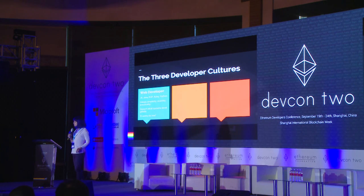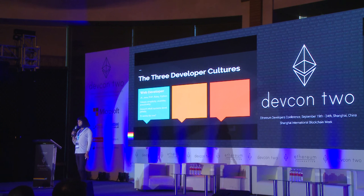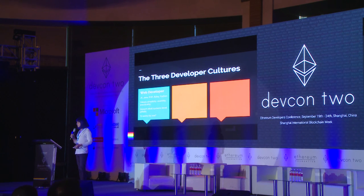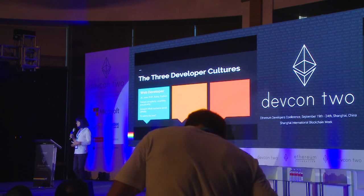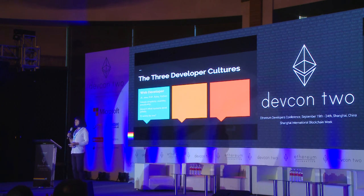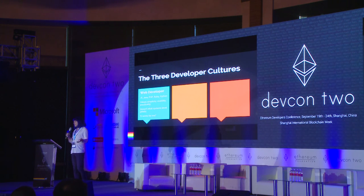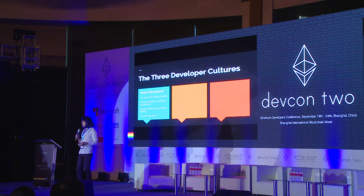The first is the web developer. Web developers often use languages like JavaScript, Java, PHP, Ruby, or Python. They value simplicity, usability, and practicality — they want to build a product. The downside is that because they often work in very high-level languages, they don't have that intuition for things like array out of bounds, spamming attacks, or attacks that are very specific to the system and to the hardware or VM. Web developers don't have that intuition, so they may undervalue those security concerns.